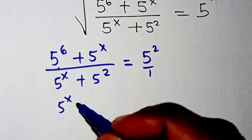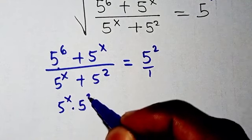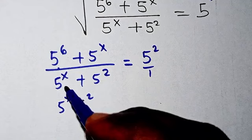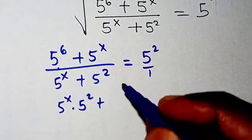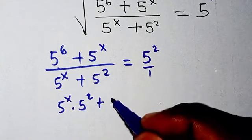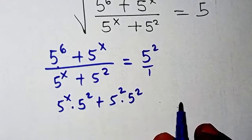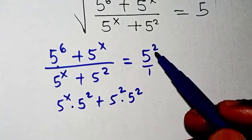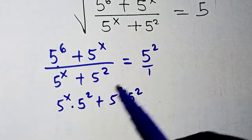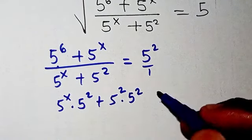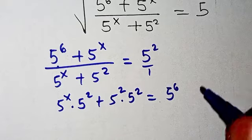Multiplying through, we're going to have 5 to power x multiplied by 5 to the power of 2. Then 5 to power of 2 times 5 to power of 2. So if we use 5 to power 2 to multiply, we have 5 to power 2 times this, and then equals we have 5 to the power of 6.